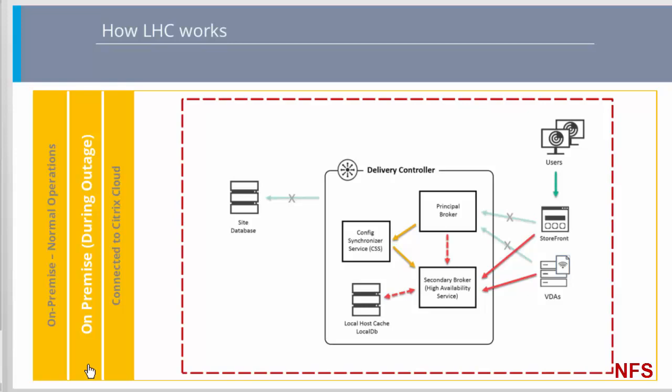While the secondary broker is handling connections, the principal broker continues to monitor the connection to the site database. When the connection is restored, the principal broker instructs the secondary broker to stop listening for connection information, and the principal broker resumes brokering operations. The next time a VDA communicates with the principal broker, a re-registration process is triggered. The secondary broker removes any remaining VDA registrations that occurred during the previous outage and resumes updating the local DB with configuration changes received from the CSS. In the unlikely event that an outage begins during a synchronization, the current import is discarded and the last known configuration is used.